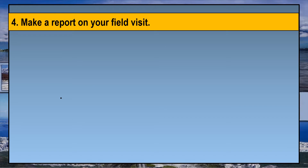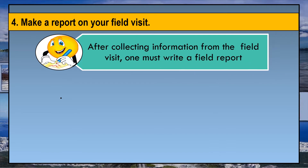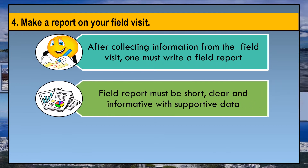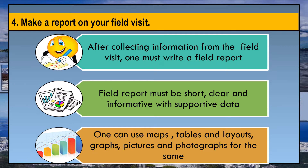When do you have to write a report? A field report is written only after collecting or gathering information from the field visit. It helps to review your work systematically and acts as a reference for future field trips. How to write a field report? A field report must be short, clear, and informative with supportive data. One can use maps, tables and layouts, graphs, pictures, and photographs.